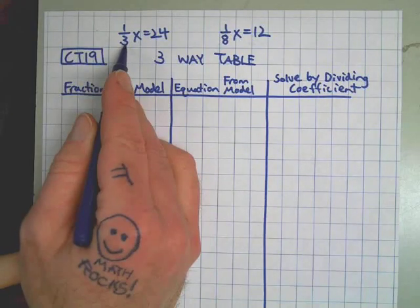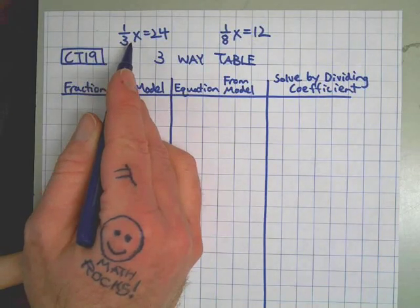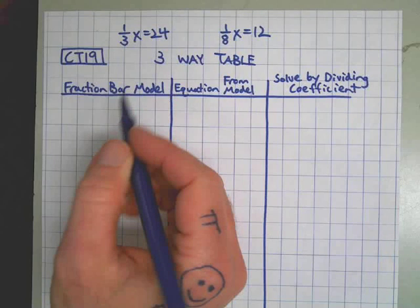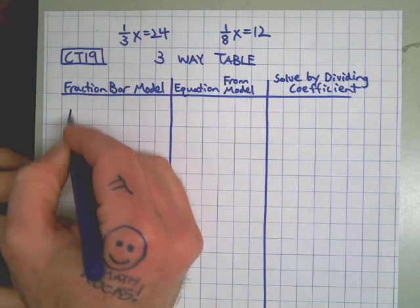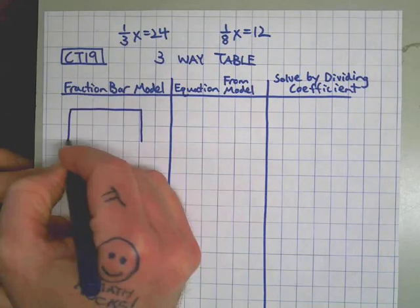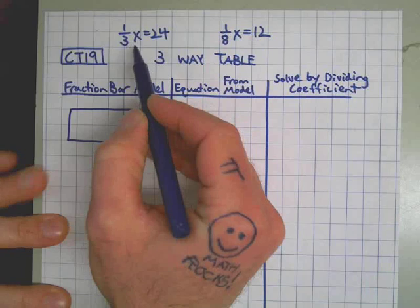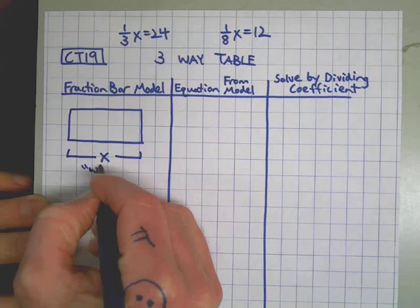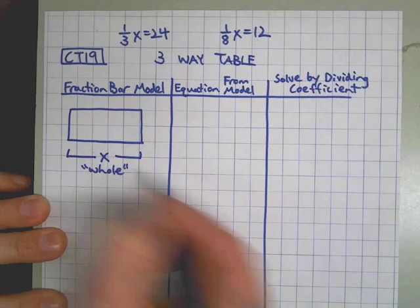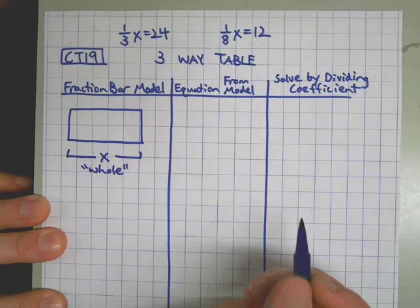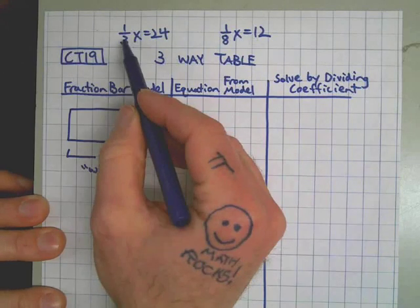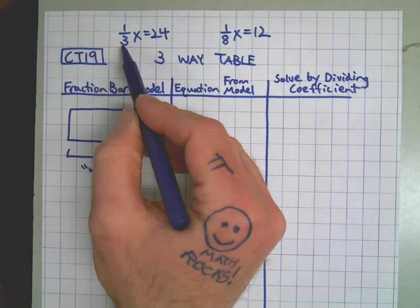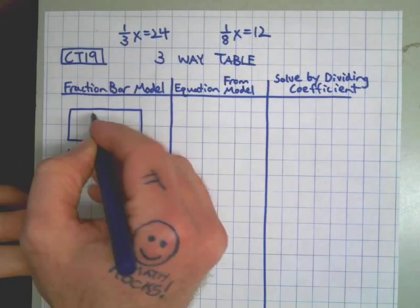Here we go. The first one: one-third of x is 24. Fraction bar model starts with a rectangle. That is x, that is the whole. The whole thing we call x. Finally, one-third of that. The denominator here tells me how many pieces to break x into. Break it into three pieces. Two lines will get the job done.